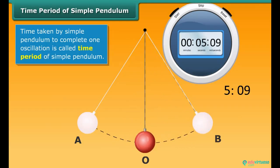Note the time taken by the pendulum to complete one complete oscillation from O to A, A to B, B to O. The time so recorded is the time period of simple pendulum.